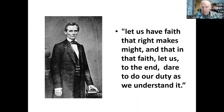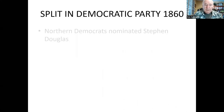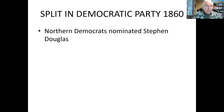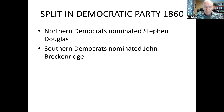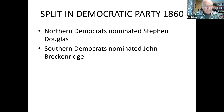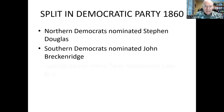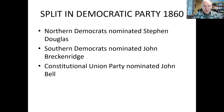Meanwhile, the Democrats could not agree on a candidate. Northern Democrats nominated Stephen Douglas, while Southern Democrats demanded a candidate committed to slavery and nominated John Breckinridge. Other Southerners wanted a unity candidate who promised not to split the country, and they nominated John Bell under the Constitutional Union Party.